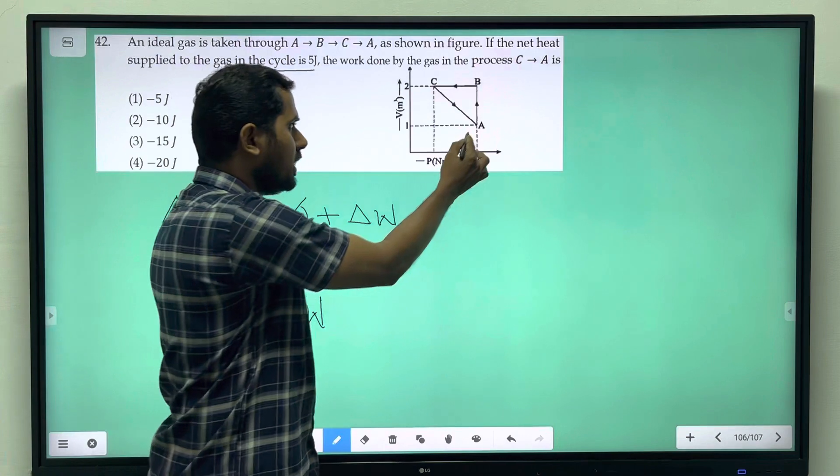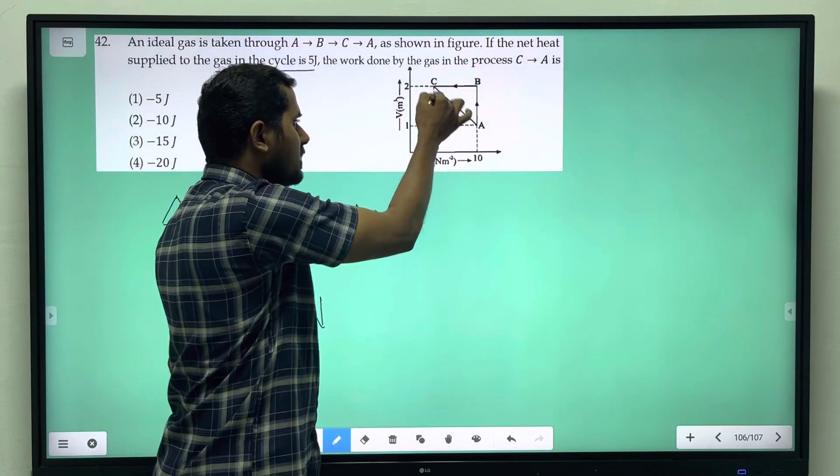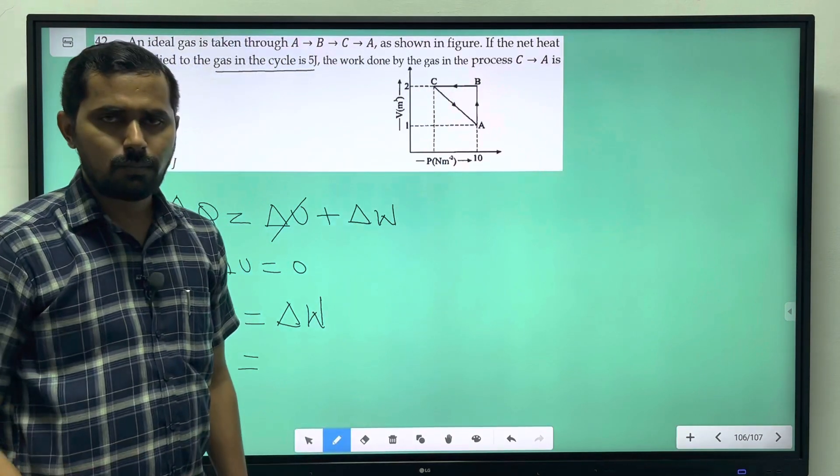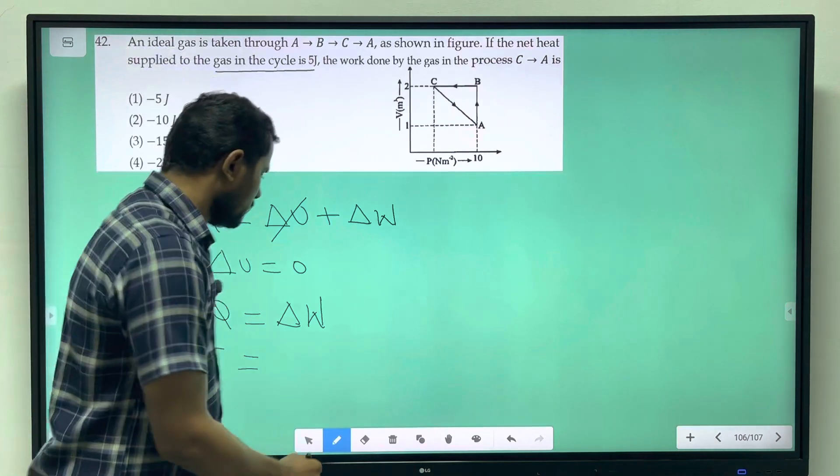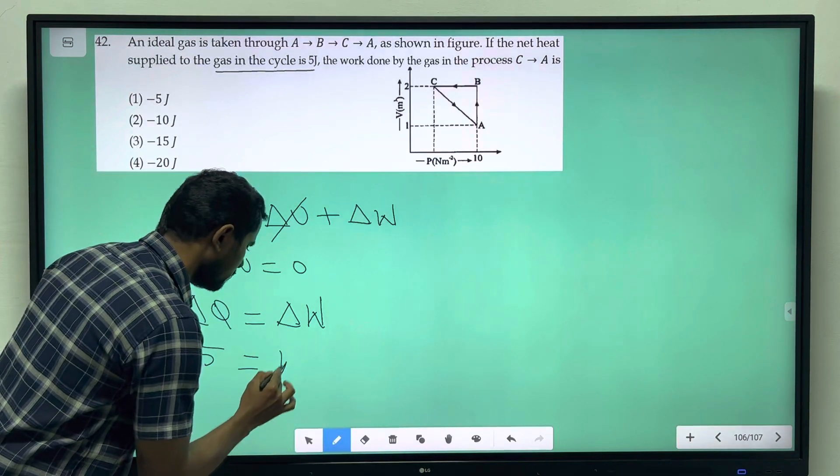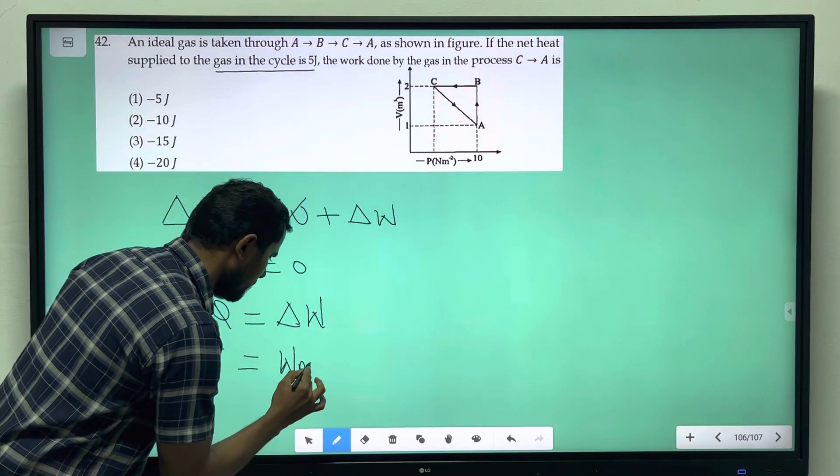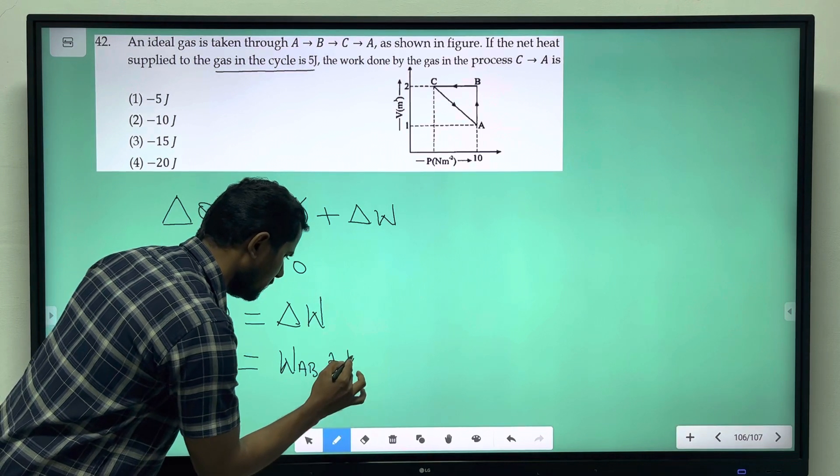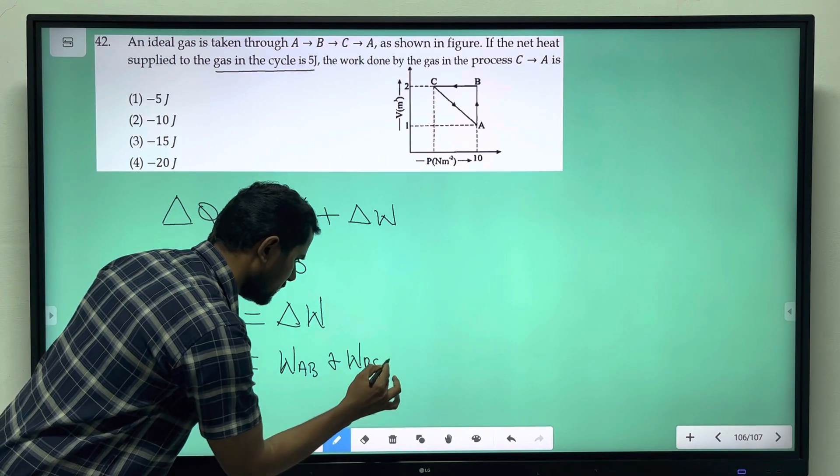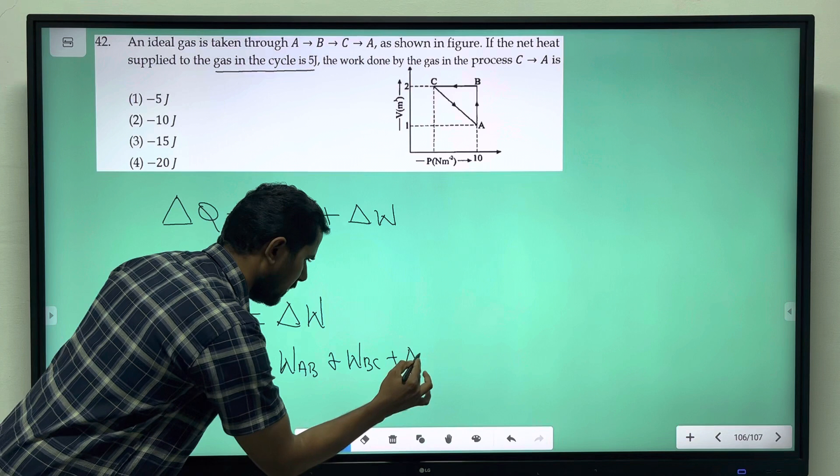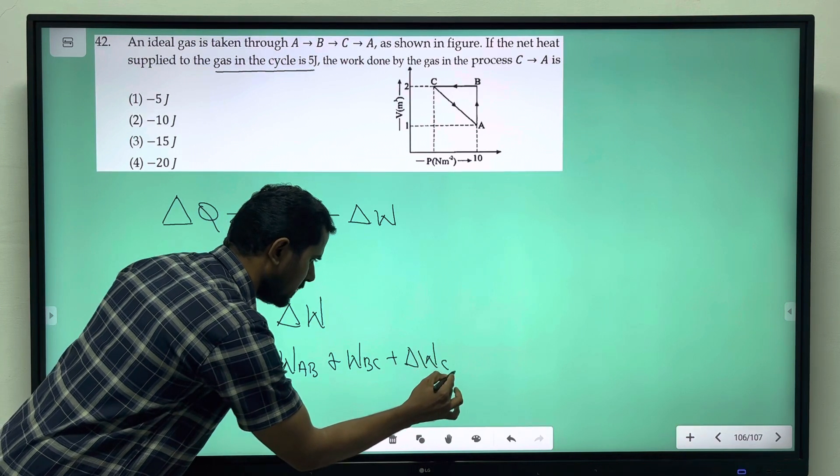ΔW. Now, work done: A-B, B-C, C-A. That is the three processes. So, work done: W_AB plus W_BC plus W_CA.